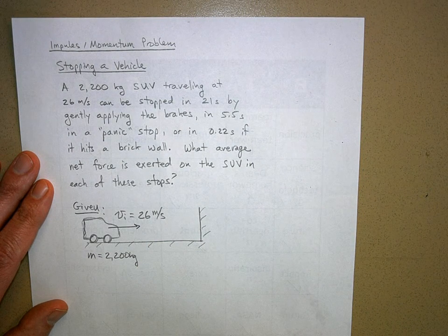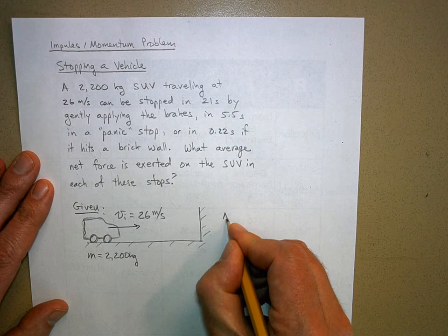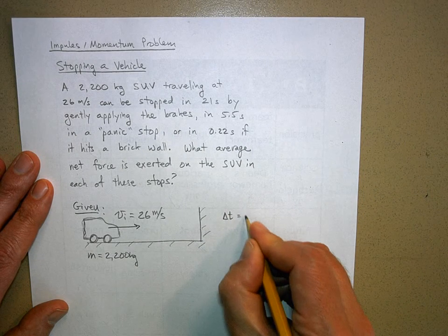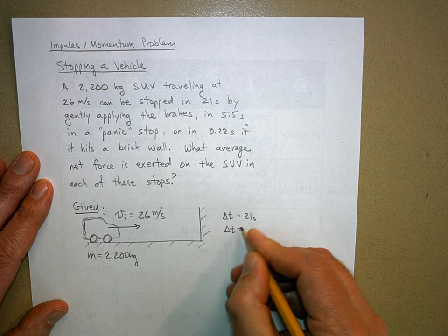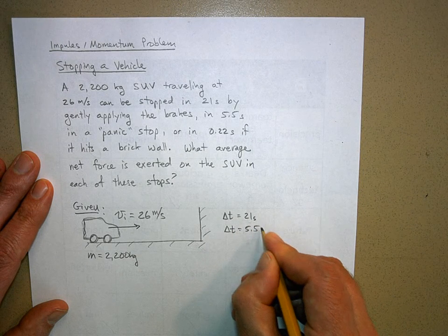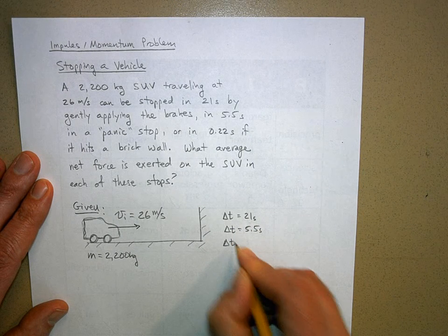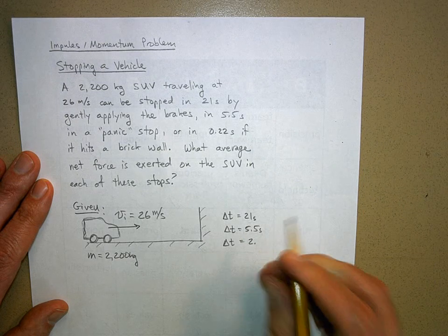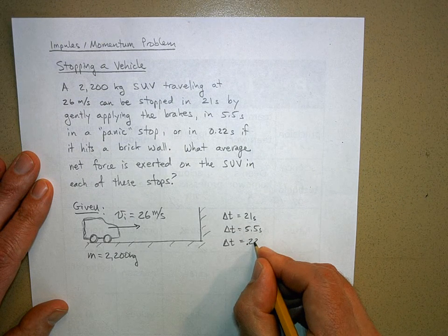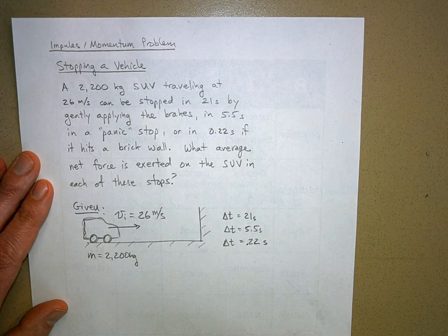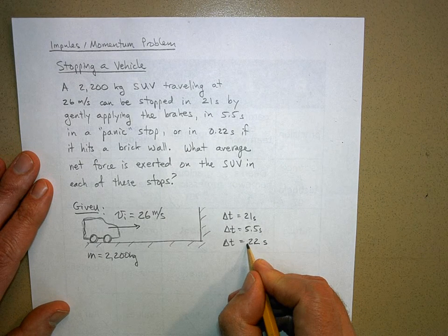We're going to stop it with three different times: we're going to have a delta t of 21 seconds, a delta t of 5.5 seconds, and a delta t of 0.22 seconds.